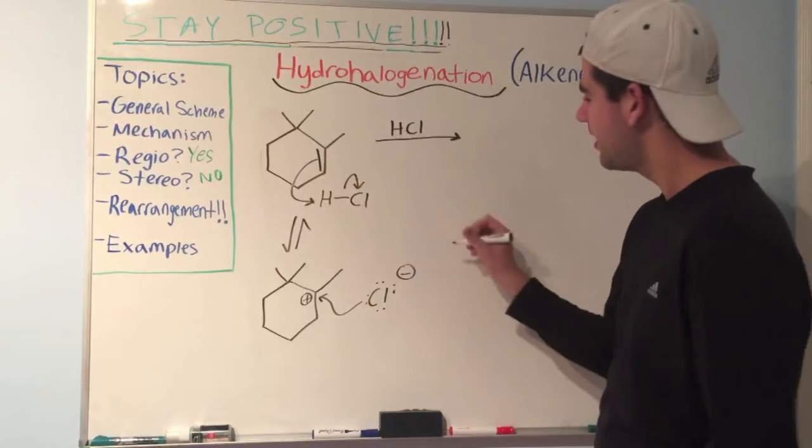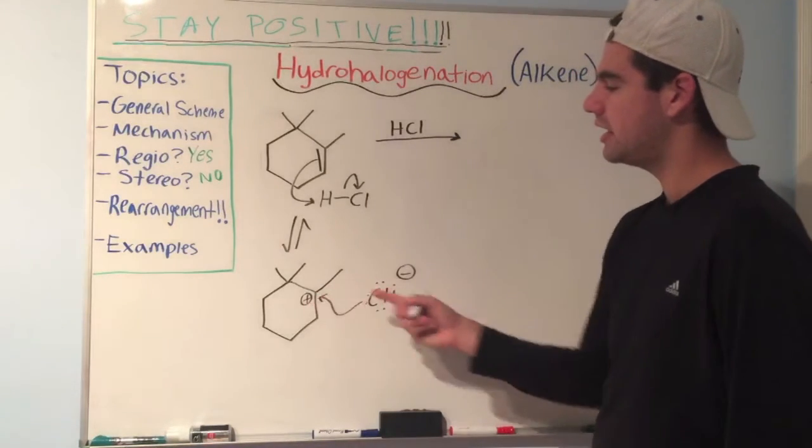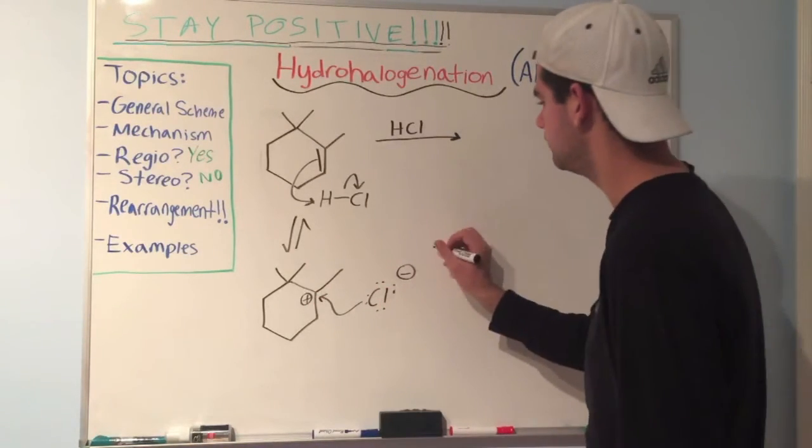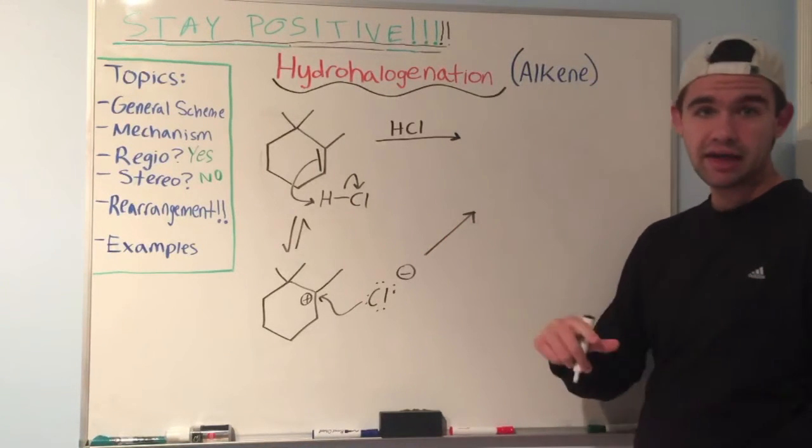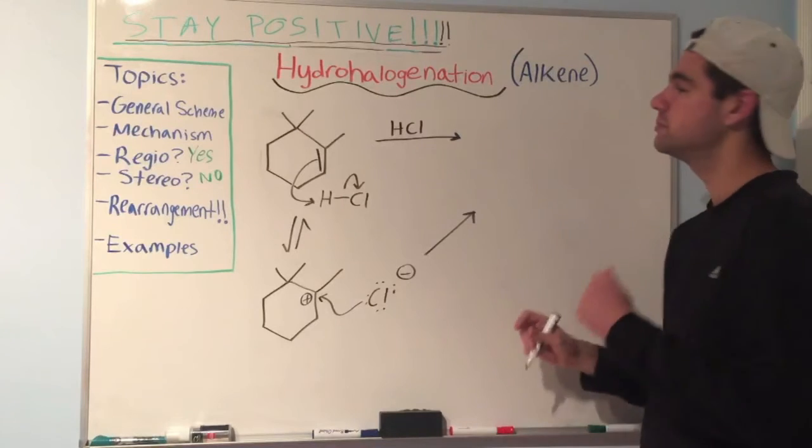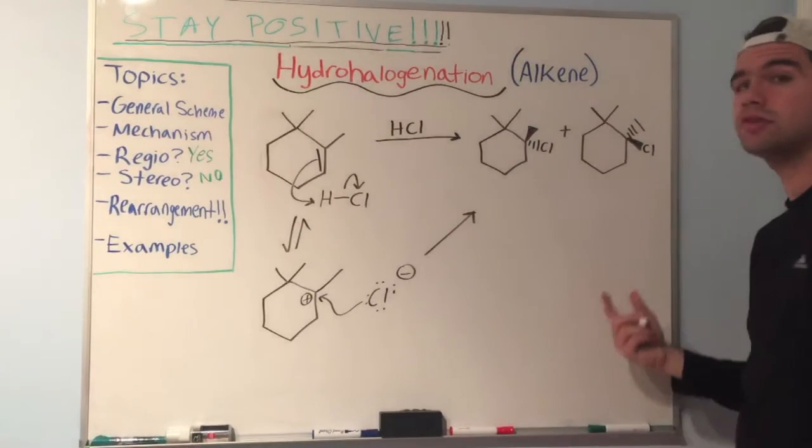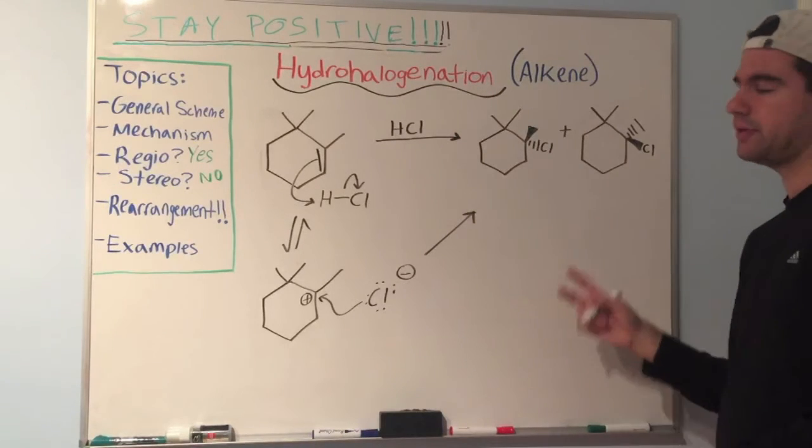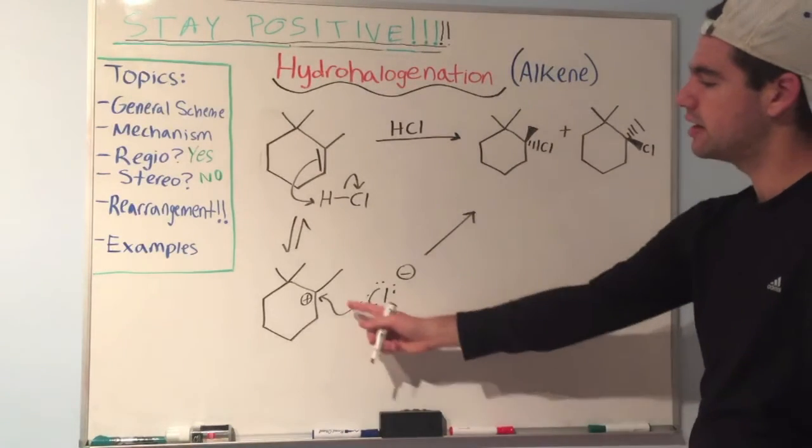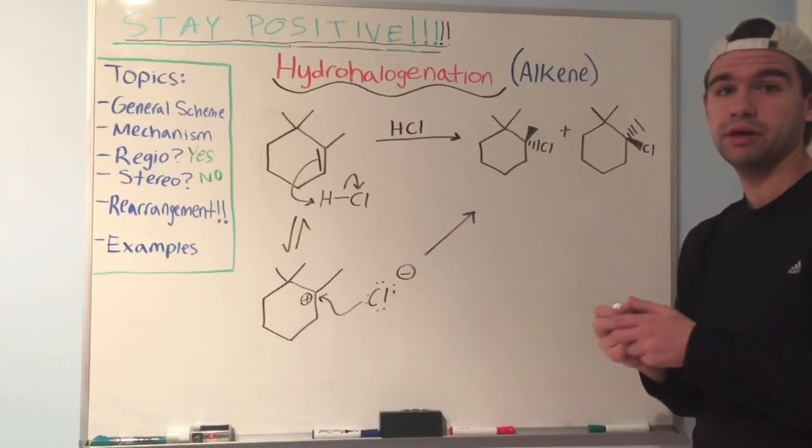It'll attack at the carbocation site and form our products. And notice I said the plural, and that's because this carbocation yields a racemic mixture. So we'll have both the R and the S configuration. We'll have both enantiomers. So notice the two products. We have an R configuration and an S configuration. We have both enantiomers because the carbocation forms a racemic mixture.